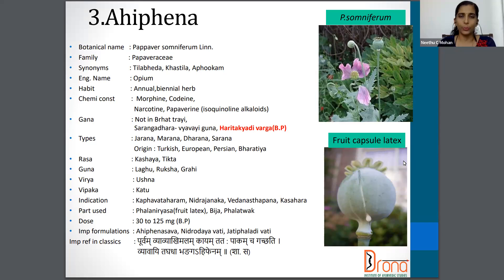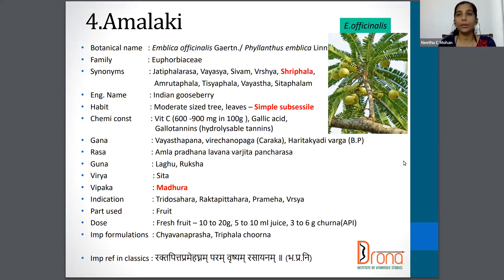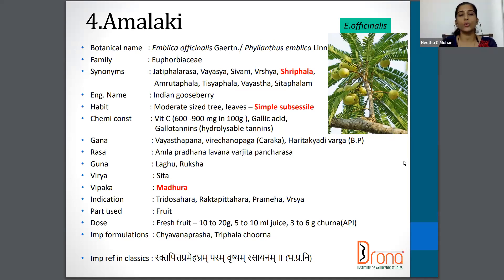The next one is Amalaki. The botanical name is Emblica officinalis or Phyllanthus emblica, Euphorbiaceae family. Synonyms are Shivam, Vrishyam, Sriphalam, Vayastha, etc. The English name is Indian gooseberry. The part used is fruit. The dosage: if using fresh fruit, 10 to 20 gram; if juice, 10 ml; and Churna is 3 to 6 gram as per API.